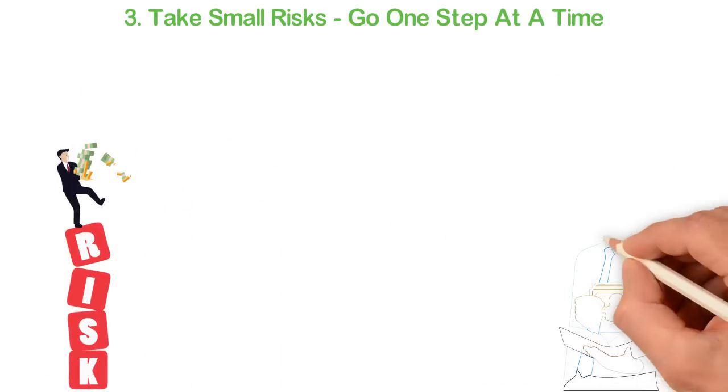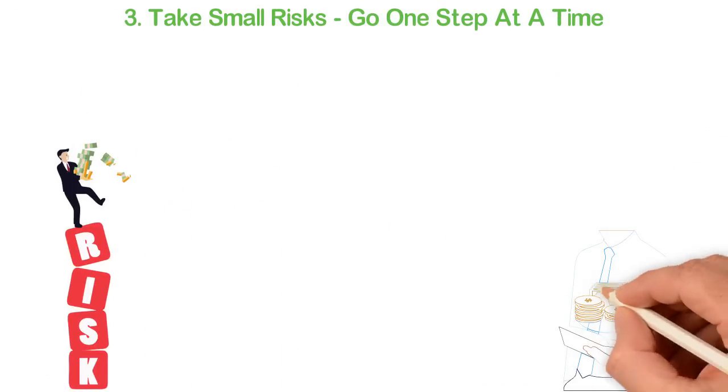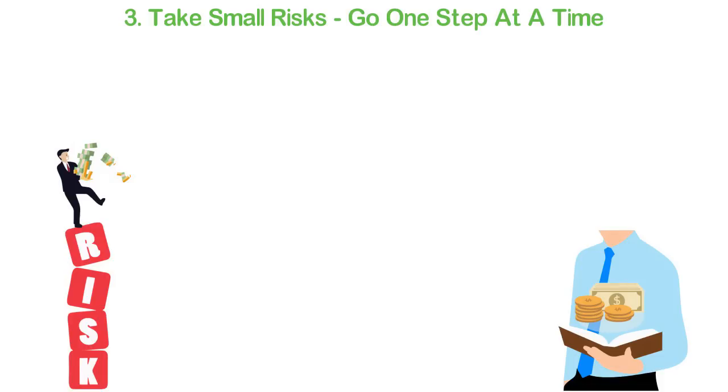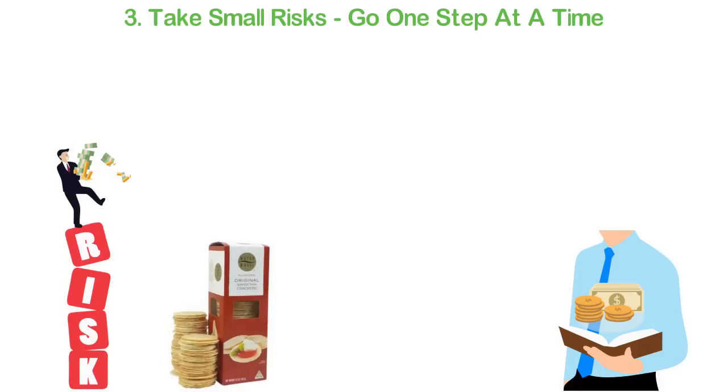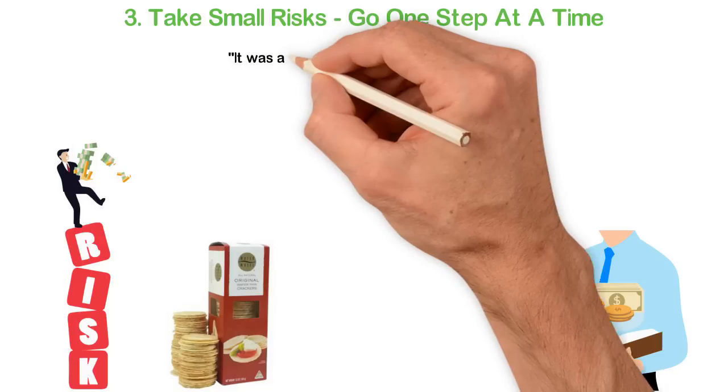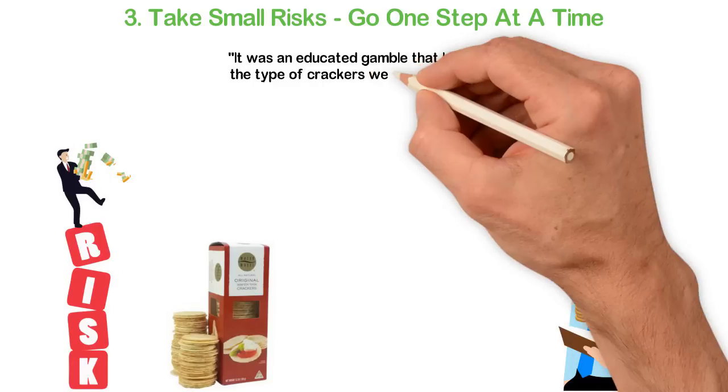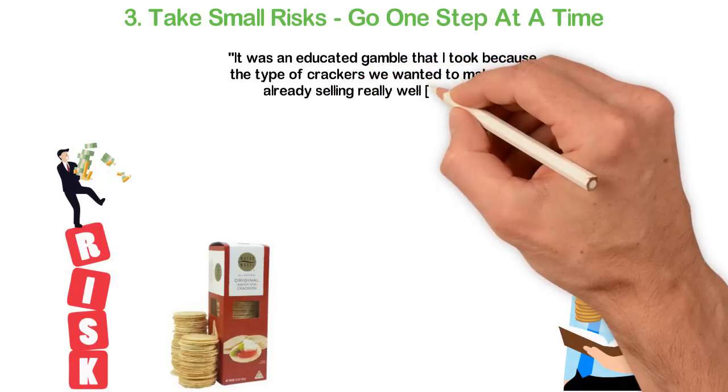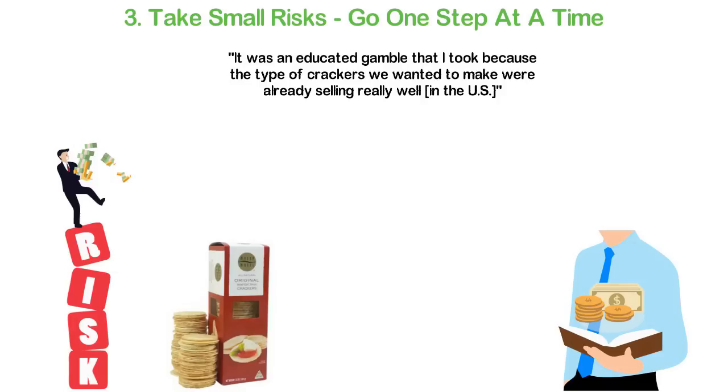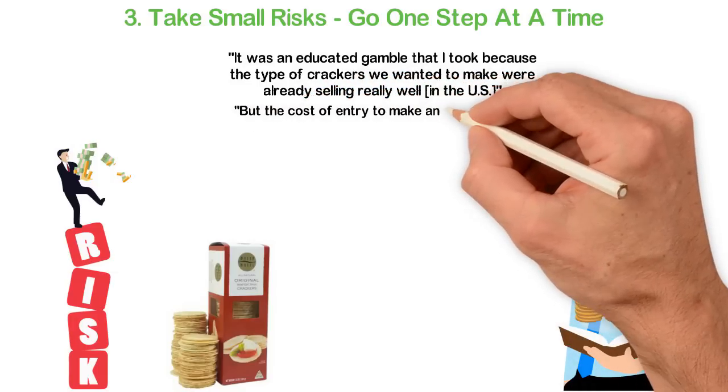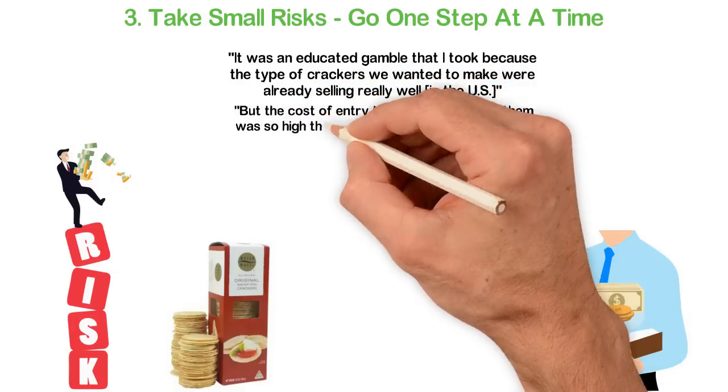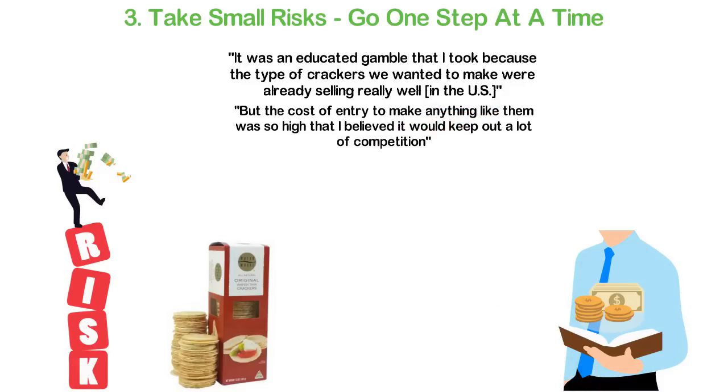Liberman eventually managed to get $500,000 gathered together from friends and family and turned his import business into 34 Degrees, a domestic manufacturer of just one product, a wafer-thin Australian-style cracker. According to him, it was an educated gamble that I took because the type of crackers we wanted to make were already selling really well in the US, he says. But the cost of entry to make anything like them was so high that I believed it would keep out a lot of competition.